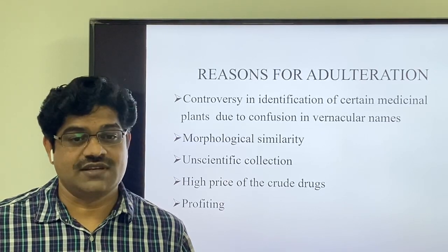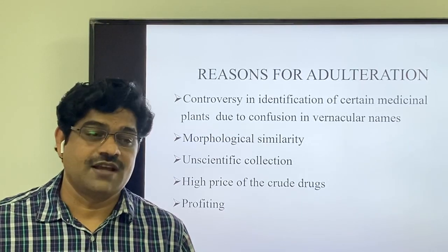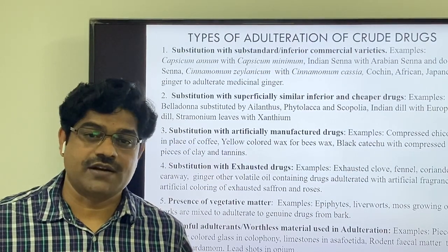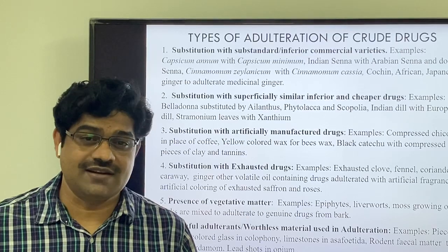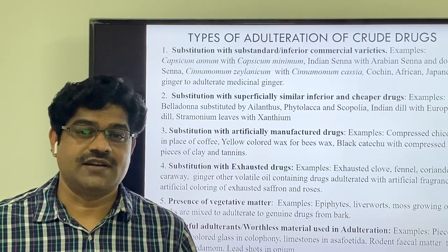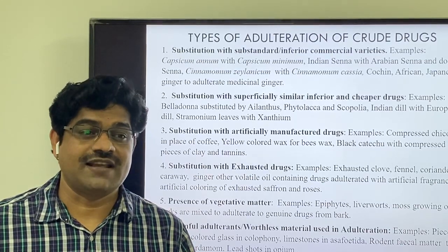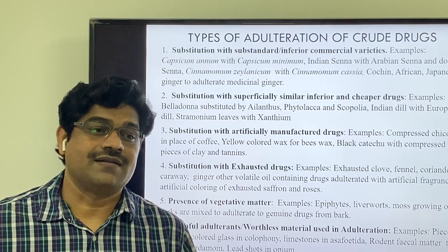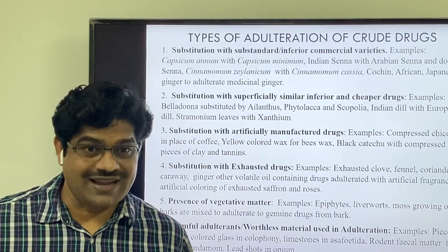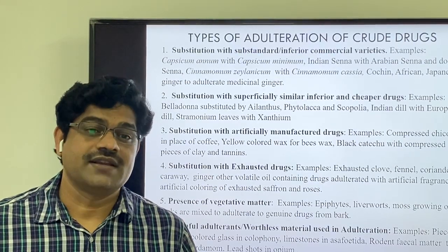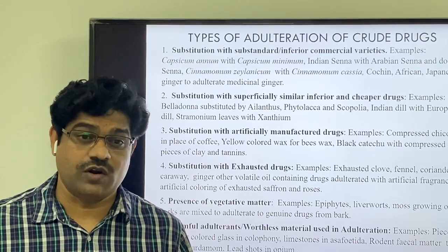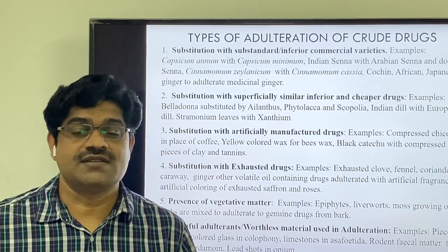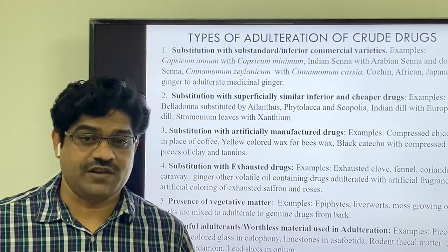Because of high prices, a supplier may intentionally add cheaper substitutes for profit. The next reason is profiting — intentionally earning more by adding substandard and cheaper drugs in place of the authentic drug. The first type of adulteration is substitution with substandard and inferior commercial varieties, where commercial varieties with an inferior chemical profile or inferior therapeutic value are used to adulterate the authentic drug. Examples include Capsicum annuum with Capsicum minimum, Indian senna with Arabian senna or dog senna, Cinnamomum zeylanicum with cassia bark, and authentic ginger with substandard varieties such as Cochin, African, and Japanese ginger.